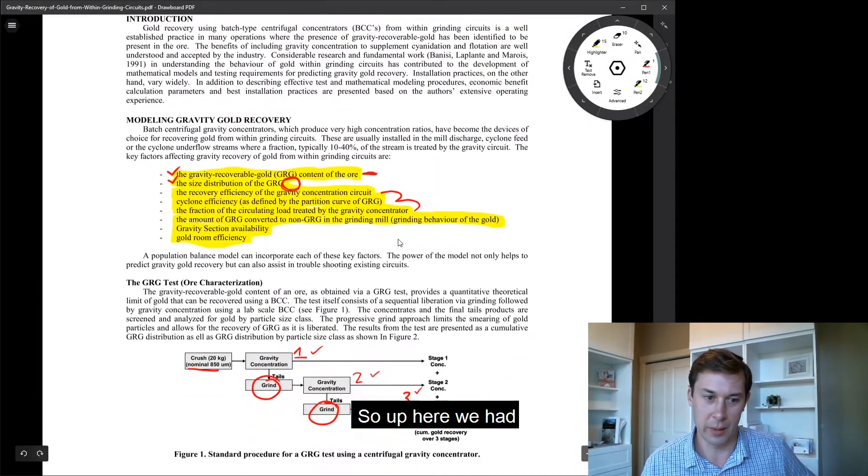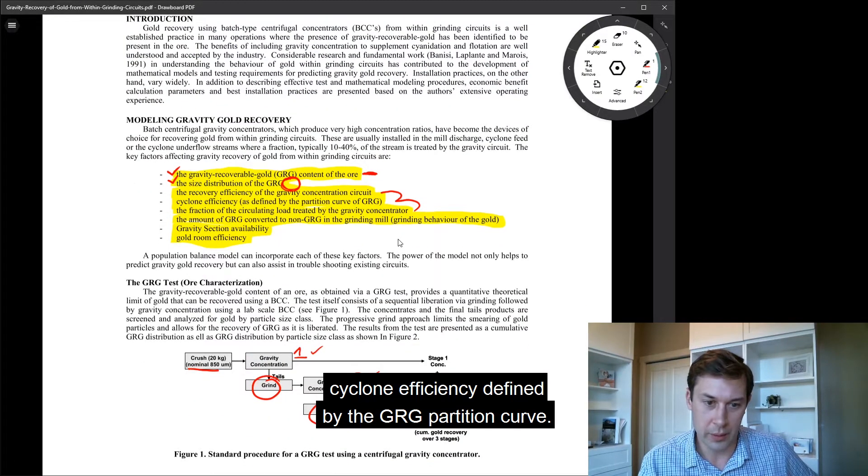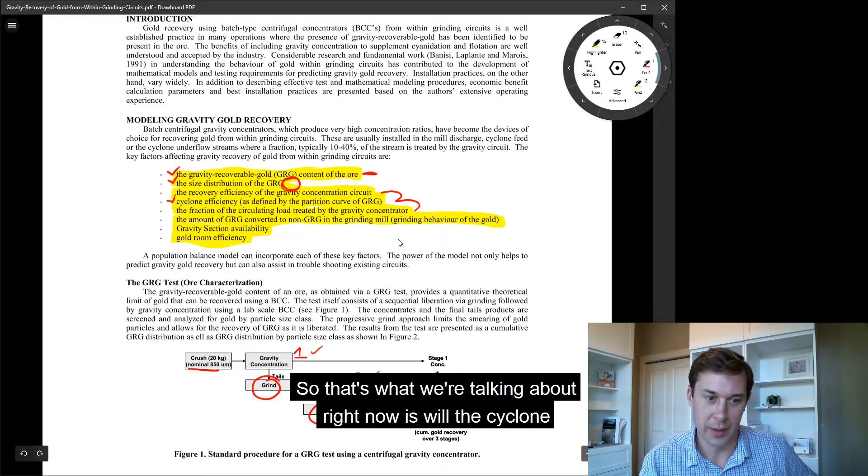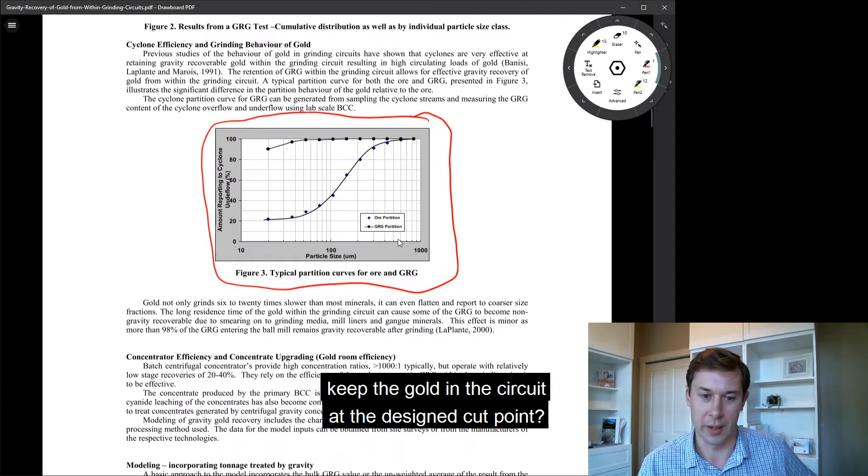Up here we have cyclone efficiency defined by the GRG partition curve. That's what we're talking about right now: will the cyclone keep the gold in the circuit at the designed cut point?